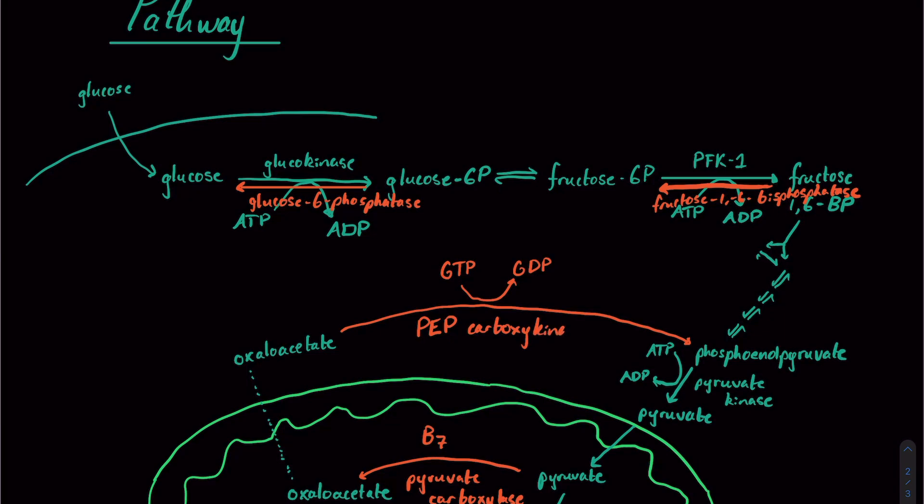And oxaloacetate will be converted back into phosphoenolpyruvate by our enzyme PEP, or phosphoenolpyruvate carboxykinase. So as the name would suggest, we're adding a couple of different things on here, and one of those is going to be a phosphate. And interestingly, most of the time we're going to be using ATP when we're adding a phosphate. PEP carboxykinase actually uses GTP,